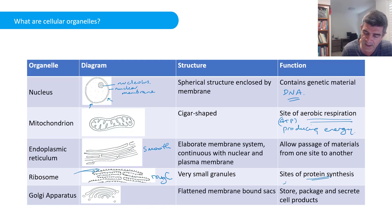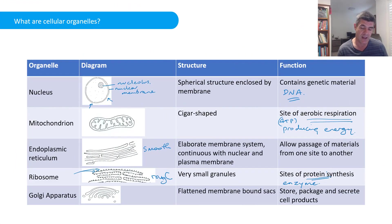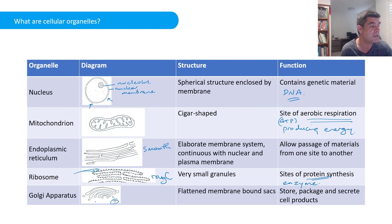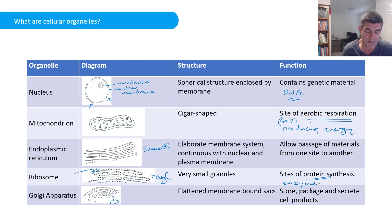Enzymes are one specialised type of protein, but there are many other types made in ribosomes. The Golgi apparatus consists of flattened membrane-bound sacs with little vesicles, sometimes called Golgi bodies, associated with them. They store, package, and secrete a range of different cell products, often including oils and fats.